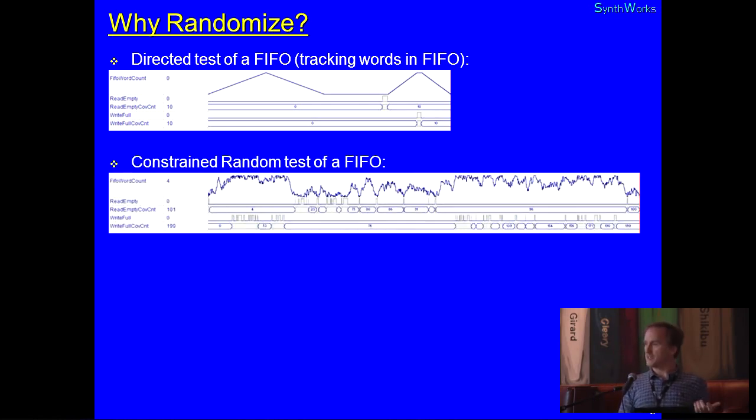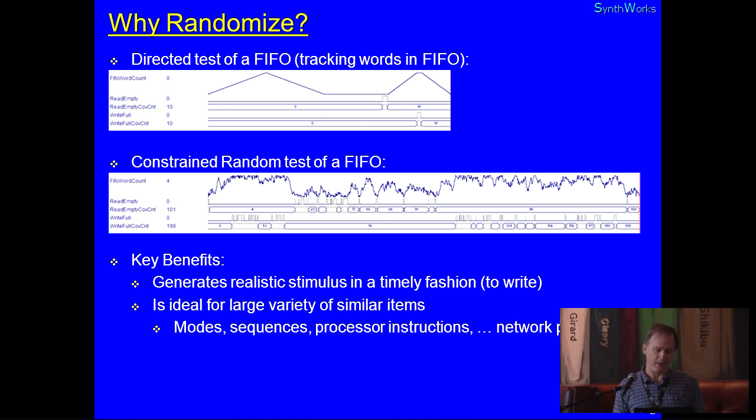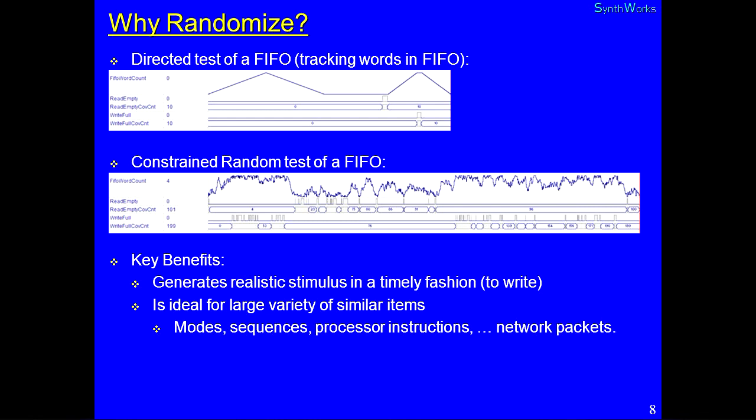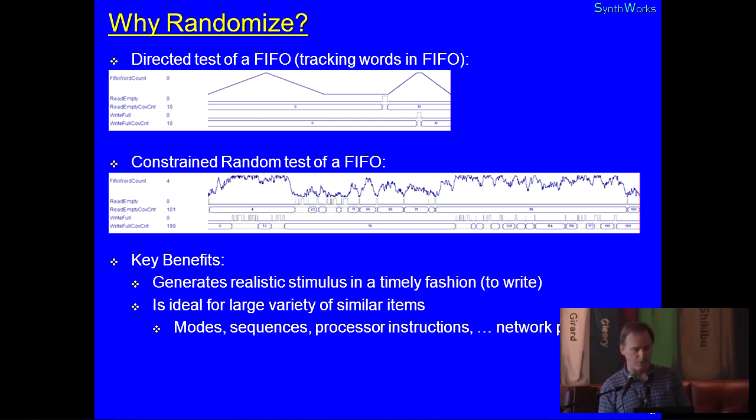But, before you say you're confident, let's take a look at what we can do with randomization. With randomization, just by putting some ad hoc heuristics there, I can say, fill it with a burst and then wait. Fill it with a burst and wait on both sides to push in the pool. And I can get something much more realistic with very minimal effort. This is not a hard thing to do. So, the benefits of randomization, then, is we get realistic stimulus in a timely fashion. And when we say timely fashion, we're not meaning execution time. We're meaning to write. I can write it. I can run it. I've got lots of CPU resources, so no problem. And it's great for anything that has a large set of similar items. Network packets, modes, sequences, and that sort of stuff.